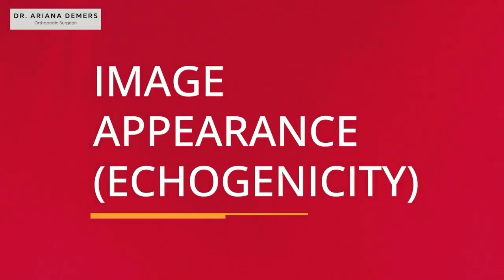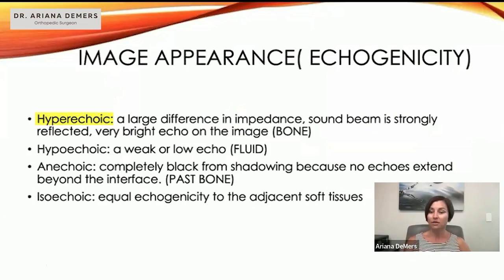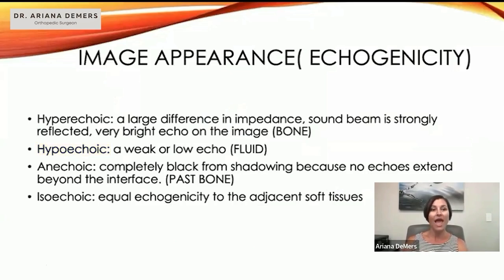Hyperechoic means there's a large difference between impedance, so the beam is strongly reflected and you have a very bright echo — a bright white line. That's usually how bone appears. Hypoechoic is a very weak or low echo signal, like fluid. Anechoic means it's completely black, with posterior shadowing because no echoes extend beyond the interface.